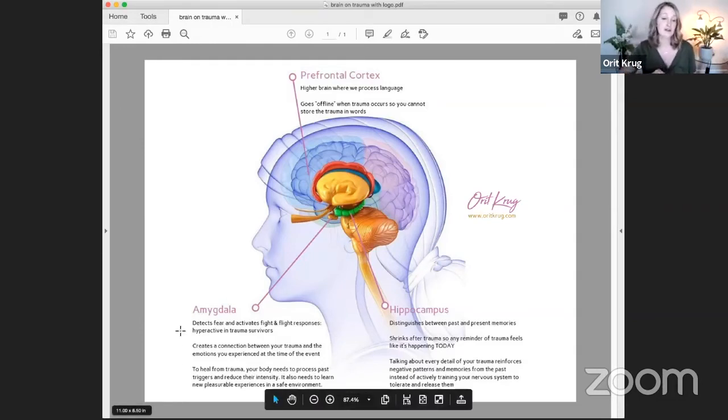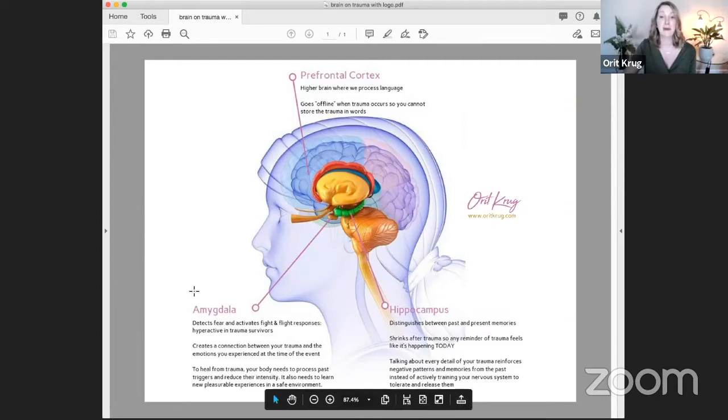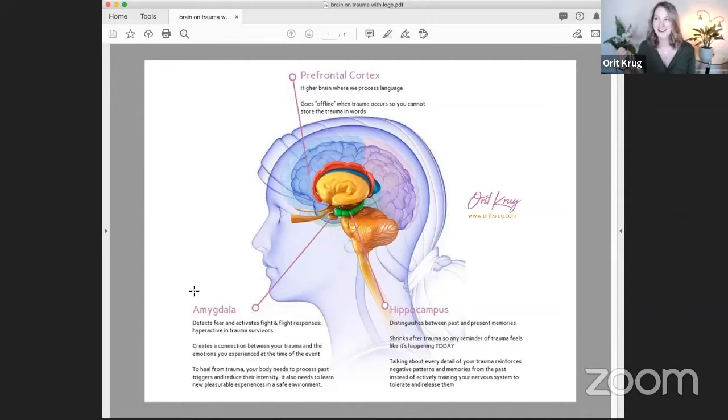The amygdala is also the part of the brain that creates a connection between your trauma and the emotions you experienced at the time of the event. And to heal from trauma, your body needs to process past triggers to reduce their intensity. And this is the part of the brain that is fighting. Like your amygdala is constantly fighting with your prefrontal cortex, right? Prefrontal cortex says my partner is safe. My partner won't hurt me. The amygdala says I'm about to get really hurt. This is not safe. This is life-threatening. This is dangerous.